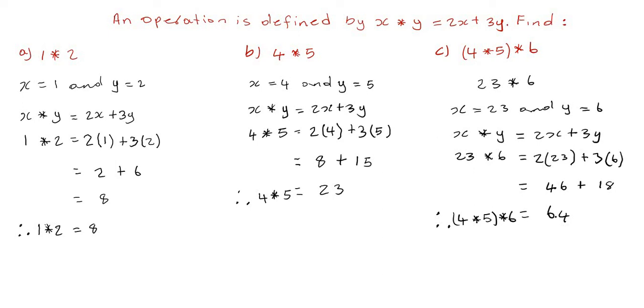So therefore (4 asterisk 5) asterisk 6 is equal to 64. That's how you complete binary operations. Thank you very much for watching — please remember to like, subscribe, share, and comment.